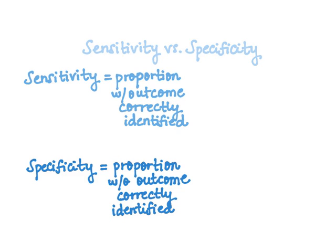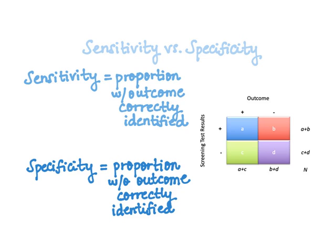From here we can pull up our two-by-two table and derive formulas for these values. Our columns represent people with versus without the outcome — typically measured against a gold standard — and our rows represent the screening test results. Our first cell, A, signifies our true positives, whereas D signifies our true negatives.